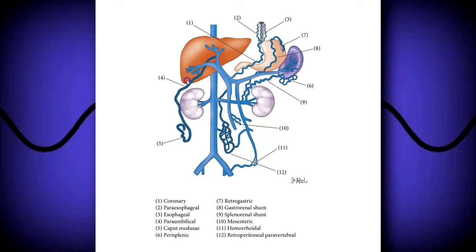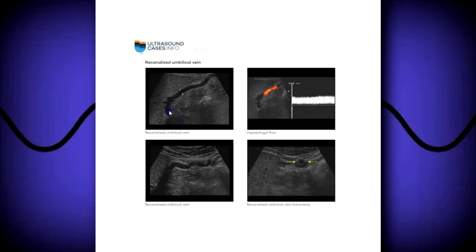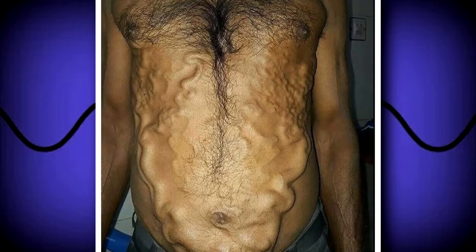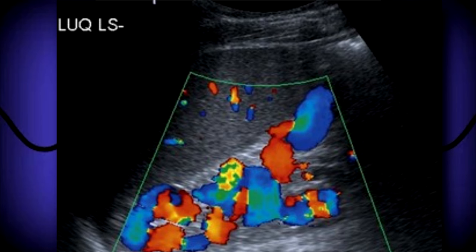Collaterals can form in many places: the gallbladder, spleen, esophagus, stomach, subcutaneously — the caput medusae sign — and can lead to life-threatening variceal bleeding. Among the collateral pathways are the caput medusae, esophageal, gastric, splenic, and splenorenal varices. Here is a case of a recanalized para-umbilical vein — the ligamentum teres in the sagittal plane will be dilated and fill with flow on color and pulse wave Doppler. This is what the caput medusae sign looks like: multiple varices under the skin surface. Here is a spleen with multiple varices at the splenic hilum.